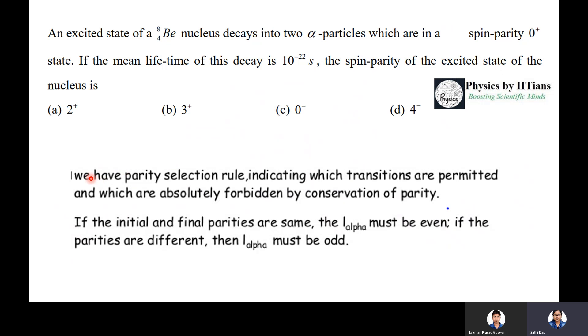We have to apply the selection rule for this alpha decay. The parity selection rule indicates which transitions are permitted and which are absolutely forbidden by conservation of parity. If the initial and final parities are same, then l_alpha must be even. If the parities are different, then l_alpha must be odd.